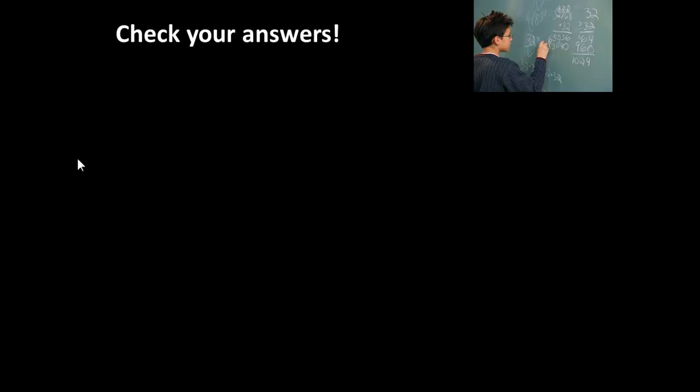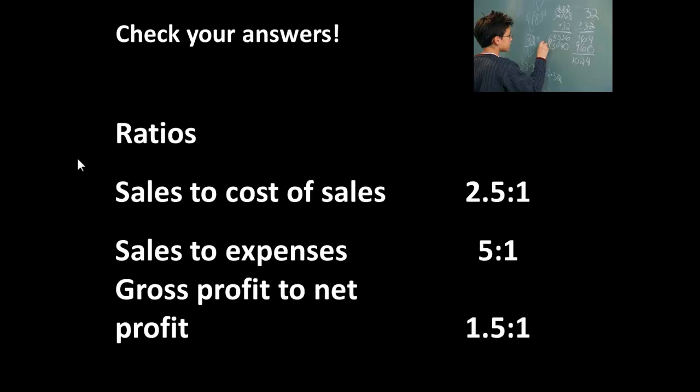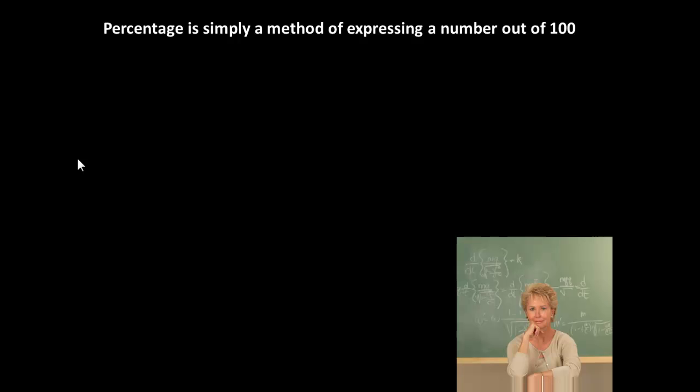So if you were doing the other ones: sales to cost of sales is 2.5 to 1, sales to expenses comes out as 5 to 1, and gross profit to net profit is 1.5 to 1.